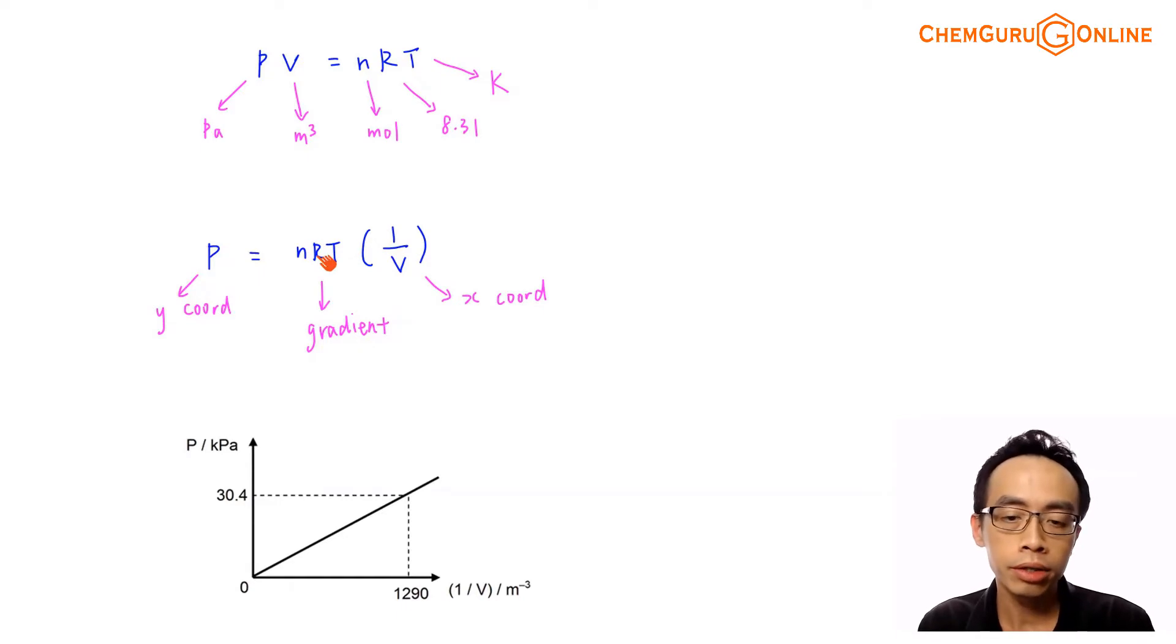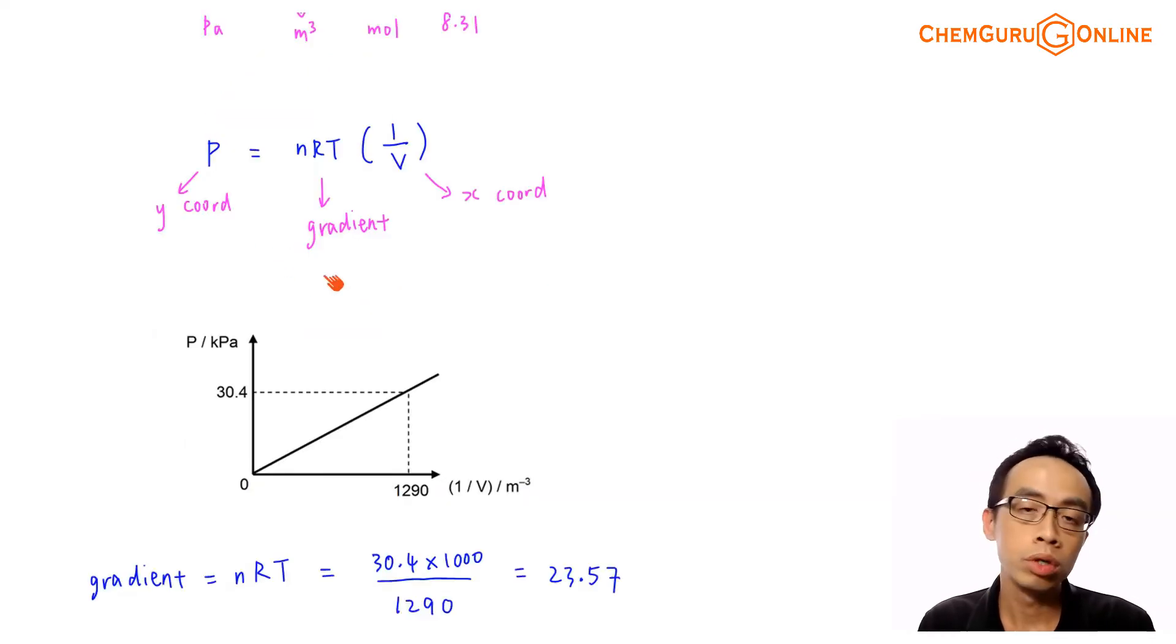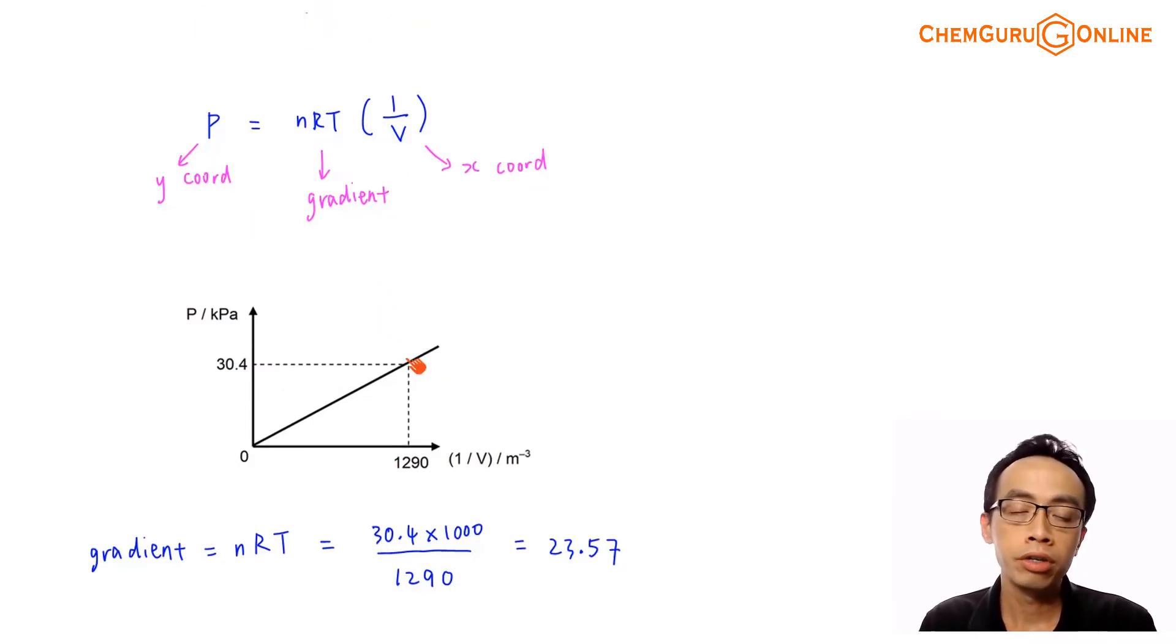And since the question is asking us to determine molar mass, so molar mass is tied directly to number of moles. So what we do is we find the gradient and the gradient is equals to nRT and we work towards finding the relative molecular mass. Now finding the gradient shouldn't be that much of a problem because we have this point here, the 1 over volume value will be 1290 per meter cube and the pressure value will be 30.4 kilo Pascal. So I can find this gradient fairly easily, but we have to keep in mind the pressure is in terms of Pascal. So therefore we have to convert 30.4 kilo Pascal to Pascal.